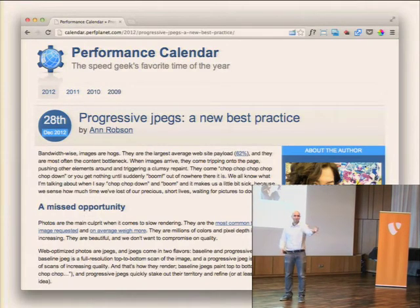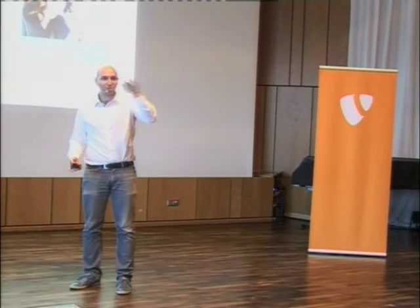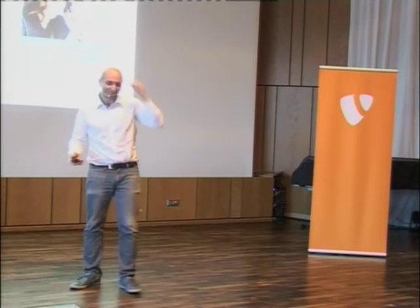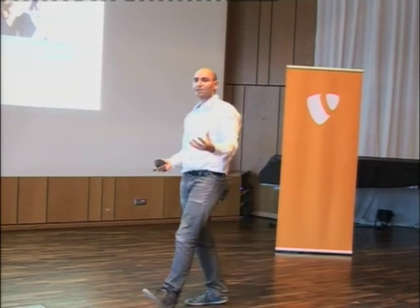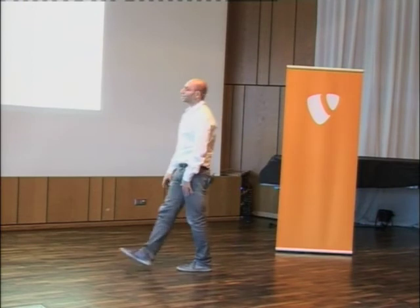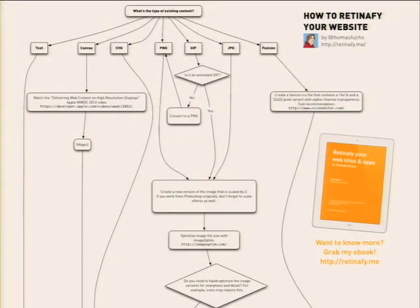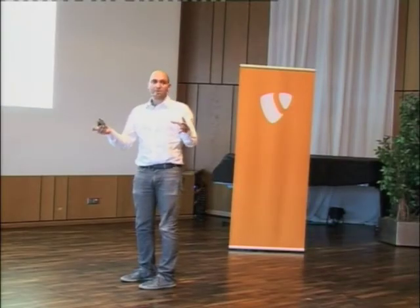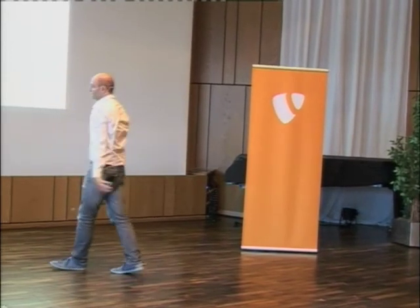There are progressive JPEGs and baseline JPEGs. Progressive JPEGs appear first at low quality and then improve over time. It's better to show the image at worst quality first so users can at least see it, then have quality improve. Progressive JPEGs are becoming a new best practice. When it comes to retina-optimized images, there's a chart you can reference. You have to define background images for retina images rather than using the image tag for performance reasons.